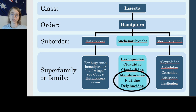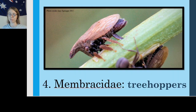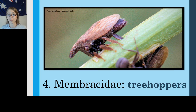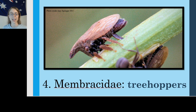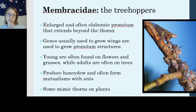Moving on to the first family, Membracidae — the treehoppers. You may have seen these around; they often look like little thorns. These are small insects, often the size of your pinky fingernail or smaller. Like most Auchenorrhynchans, they live on plants. So a few facts about their life history and ecology.